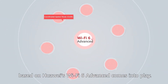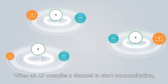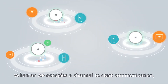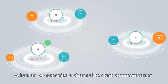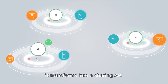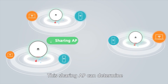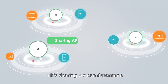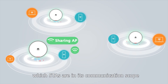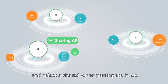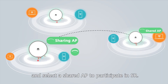When an AP occupies a channel to start communication, it transforms into a sharing AP. This sharing AP can determine which stations are in its communication scope and select a shared AP to participate in SR.